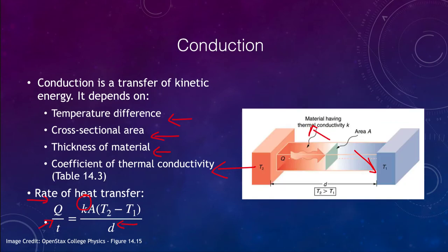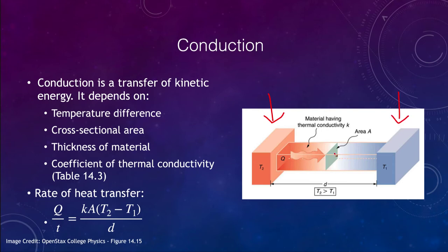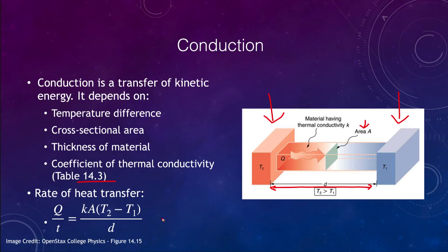The thermal conductivity coefficients are given in table 14.3 if you need them for a problem. Looking at the diagram, you have one object at T2, hotter, and a cooler object at T1, connected by something with a cross-sectional area A. The bigger that area, the quicker the heat can be transferred. There is some distance between them — the smaller that distance, the quicker the heat transfers. The thermal conductivity K can be looked up in the table, and knowing the temperature difference allows us to calculate the heat transfer rate.